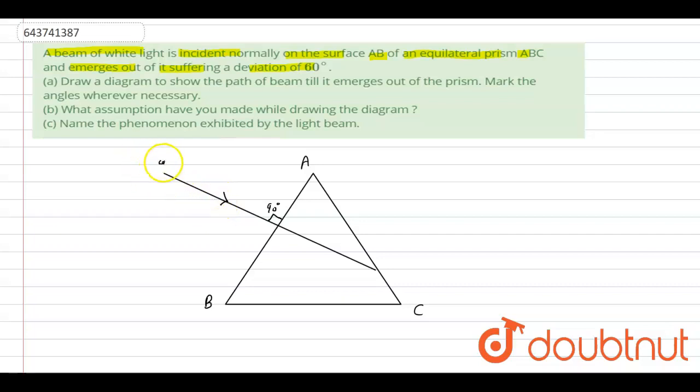White light. And here is normal of AC surface. And after reflecting, it reflects here.